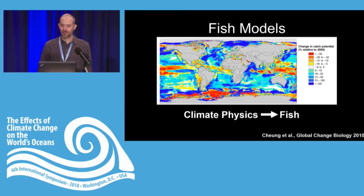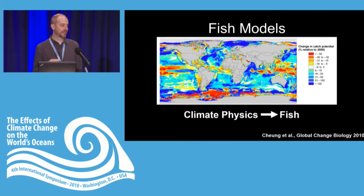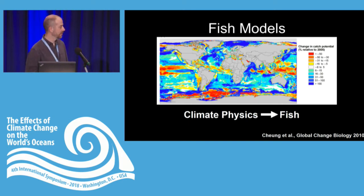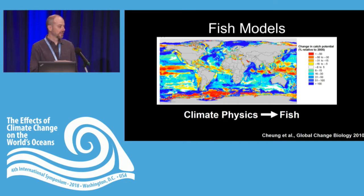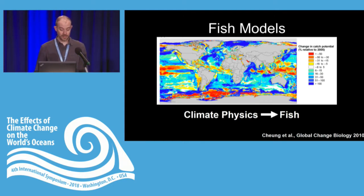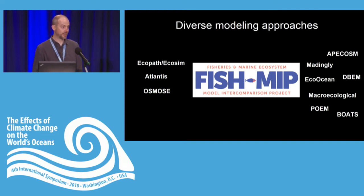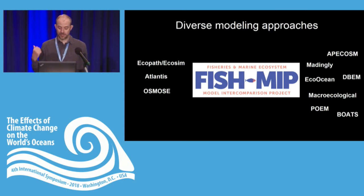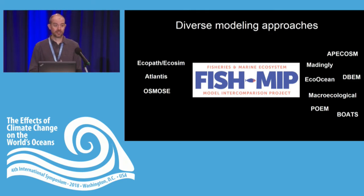Now I'm going to talk a little bit about global fish models — attempting to go from the climate physics out of the GCM to projecting fish at the global scale. This is a picture from William Chung's pioneering and very influential paper in 2010, where they tried to use physical environment changes to say something about changes in the distribution and fish catch potential for fisheries at the global scale.